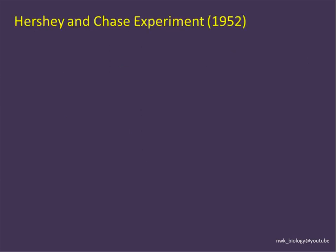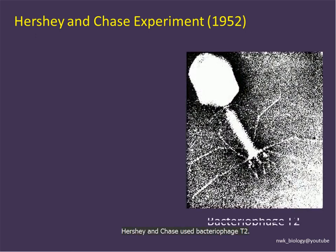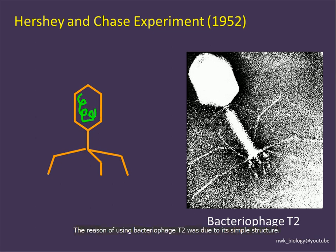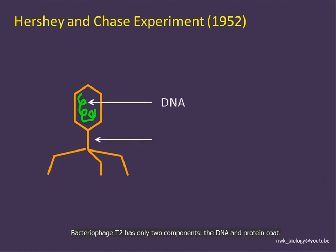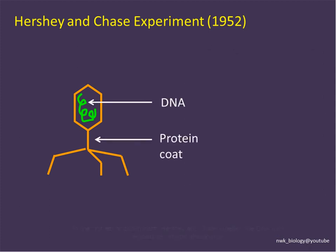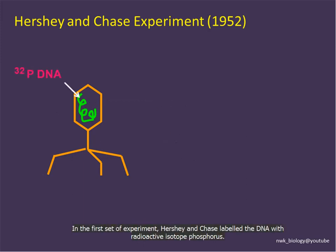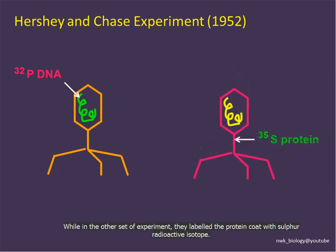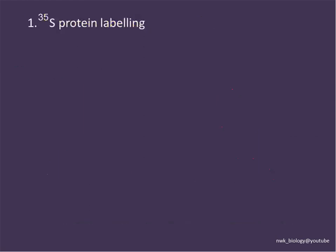The third set of experiments was conducted by Hershey and Chase in 1952. They used bacteriophage T2 due to its simple structure — bacteriophage T2 has only two components: the DNA and the protein coat. In the first set of experiments, Hershey and Chase labeled the DNA with the radioactive isotope phosphorus, while in another set, they labeled the protein coat with the radioactive isotope sulfur.